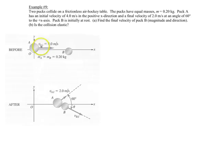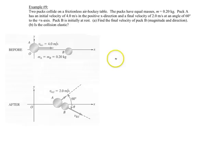We have puck A, the larger puck, and puck B — both have the same mass of 0.2 kilograms, even though they look like different objects. A is coming along and hits B off center, so this is what we call a glancing collision. We're trying to figure out V_B final. We know the final velocity of A and the angle, and we also need to find the angle that B leaves at. I'm going to first show you the component method, and then we'll look at a second way afterwards.